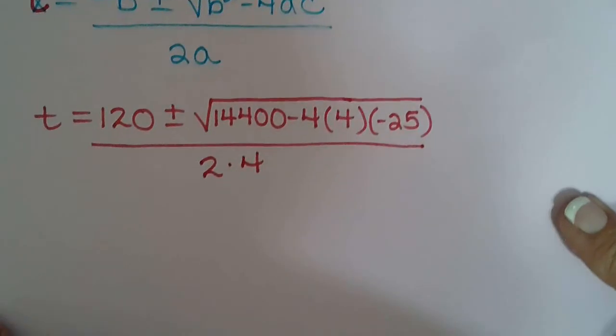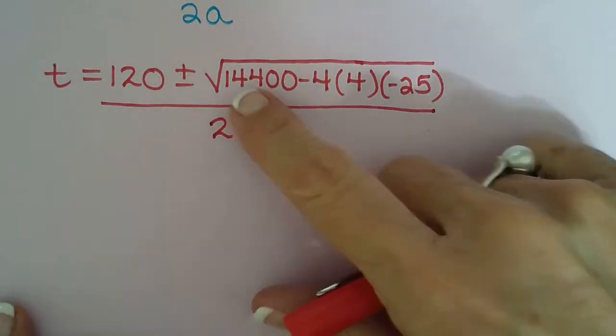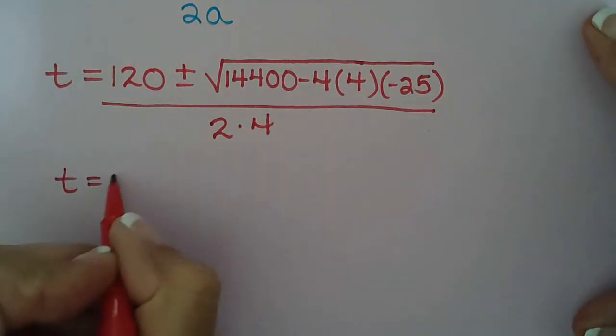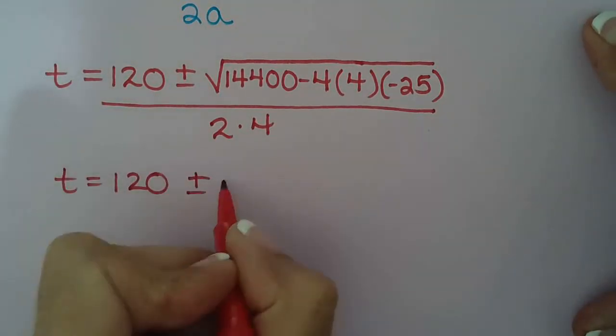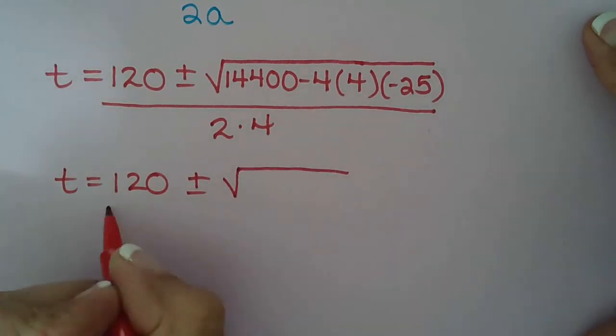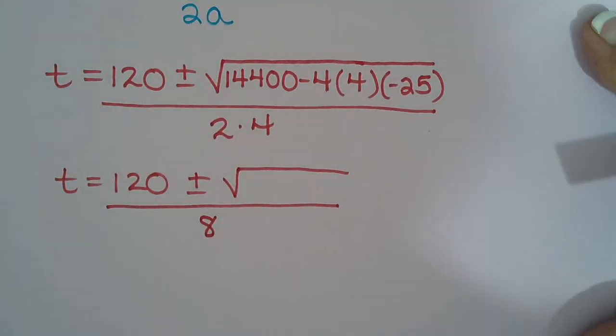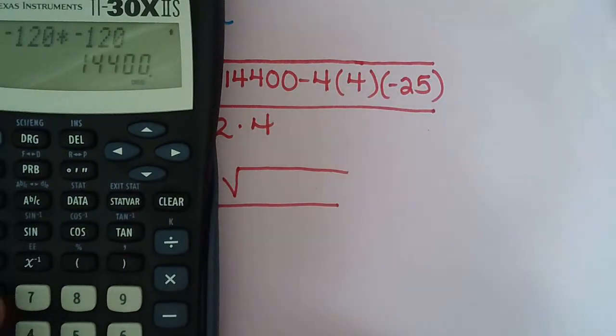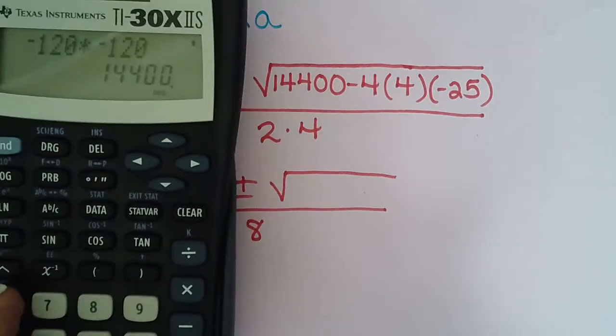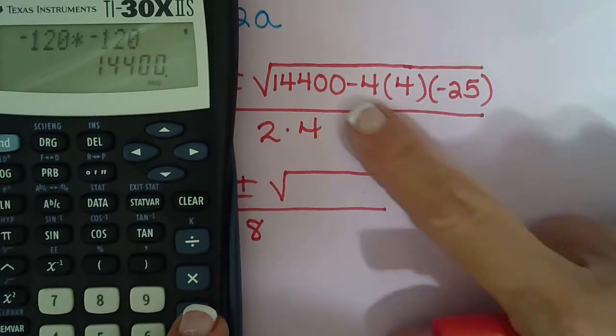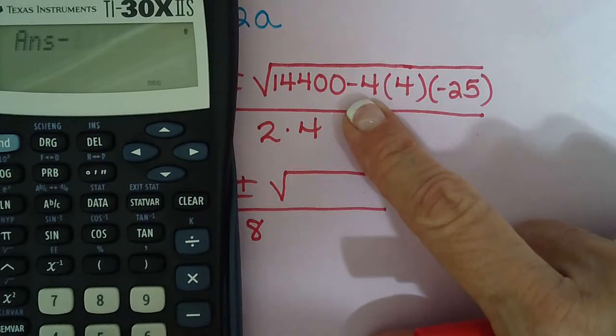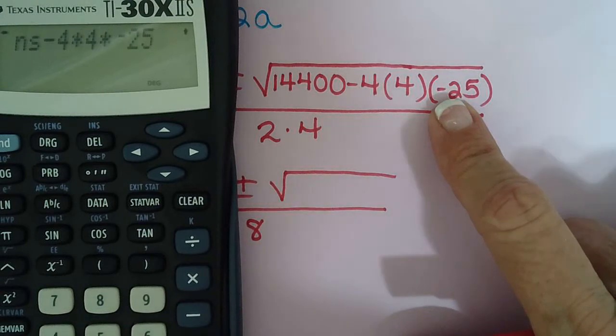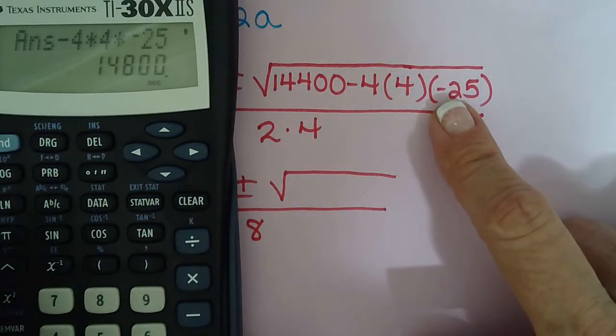Okay, so just like we did in section 7-2 when we learned this, I told you to go ahead and do this first. So get your calculator ready, 120, or get your equation ready. Empty radical all over 8. Okay, so we already have the 14,400 in the calculator. So now we can just use that and go minus 4 times 4 times negative 25. So that gives us 14,800.